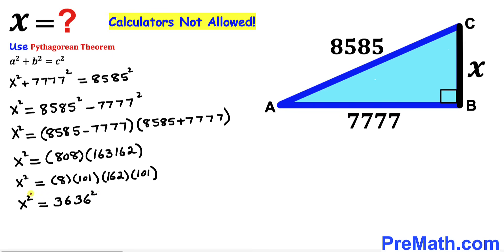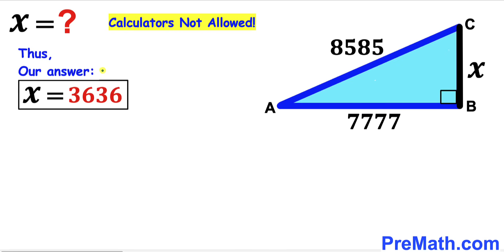Taking the square root on both sides, the squares cancel out, and our X value turns out to be positive 3636 units. So after all the calculations and manipulations, our final answer is X = 3636. Thanks for watching, and please don't forget to subscribe to my channel for more exciting videos. Bye!